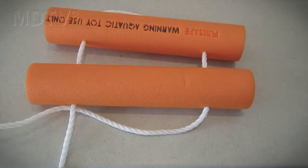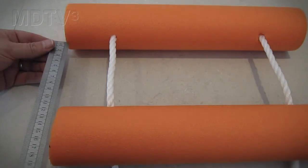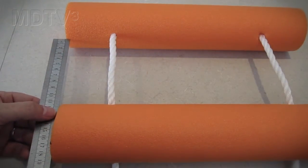Pull the rope tight against the back of the second section and make each free end approximately the same length. Position the pool noodles so that they are approximately 120 millimeters apart.